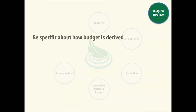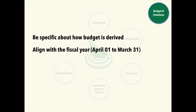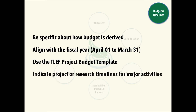And of course, as you would in any grant application, you need to be specific about budget and timelines. Align your budget with the fiscal year. We have lots of templates, example Gantt charts, and things like that on the TEA LEAF website, so make sure you check those out. Just note that new project speed code activation can take two to three weeks after the project is approved and all conditions — for example, you might need ethics clearance — are satisfied. So just make sure to plan for that.